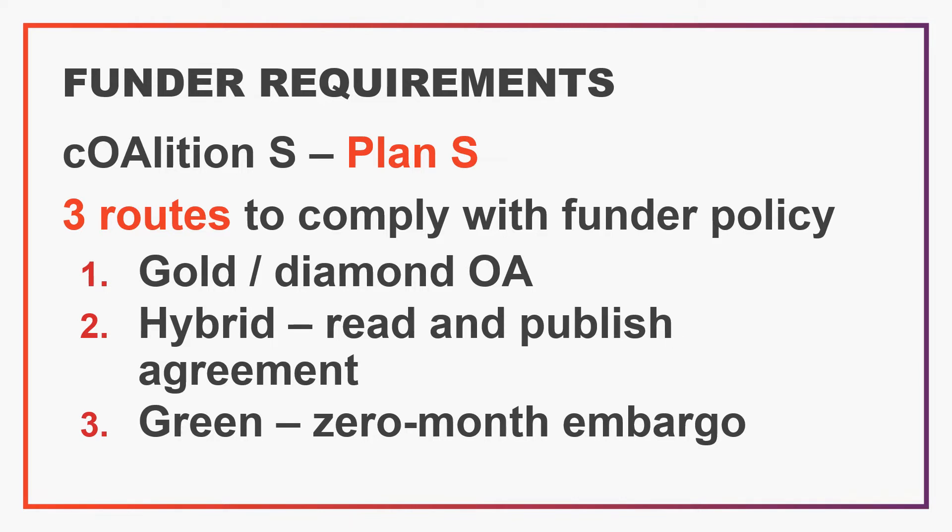The first is to publish in a compliant gold or diamond open access journal. If the journal requires an article processing charge payment, your funder should pay this. The second is to publish in a hybrid open access journal, but only if this journal is covered by one of our read and publish agreements. These agreements are signed between the university and the publishers, and they mean that payment to the publisher covers both our access to their subscription content and the article processing charges for Essex authors to publish open access. The third option is to follow the green route to open access where the full text of your paper is deposited in our institutional repository. However, there must be a zero month embargo period as Plan S requires immediate open access. This has implications for copyright if there is a mismatch between the journal's policy and the funder's policy.